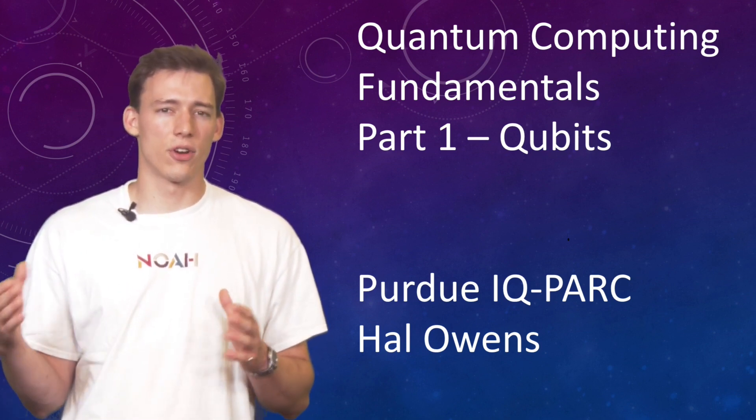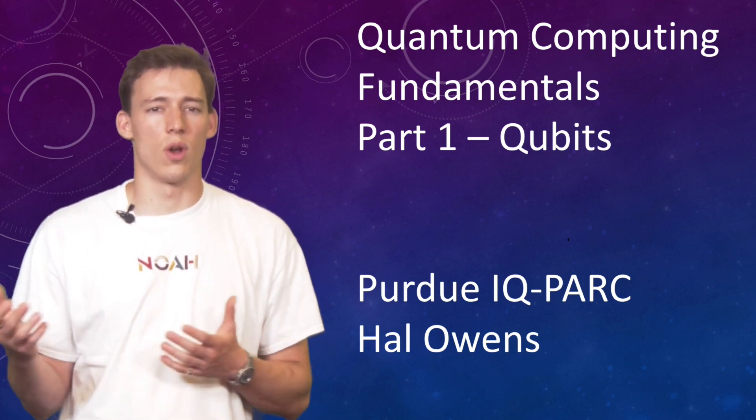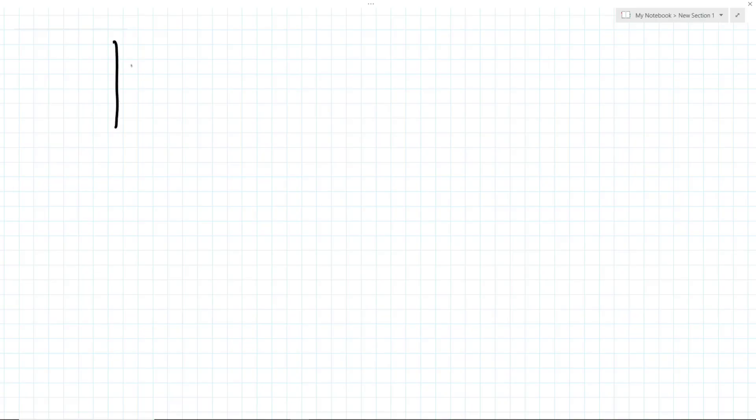Before we get into anything, first I want to do a short refresher on linear algebra and some of the notation used in quantum computing. This right here is called a ket, and it essentially just represents a column vector, which is just a list of numbers stacked on top of each other. If we flip the notation, we get what is called a bra.